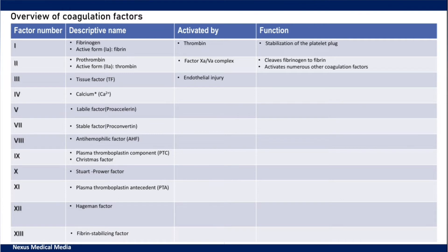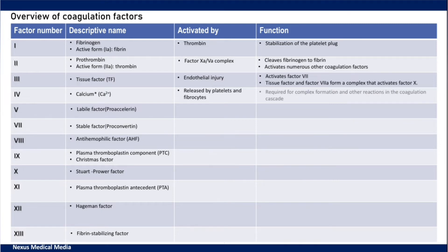Factor 3 is activated by endothelial injury and its function is activation of factor 7. Tissue factor and factor 7 in their active forms will form a complex that activates factor 10. Factor 4, calcium, is released by platelets and fibrocytes, and it is required for complex formation and other reactions in the coagulation cascade. Factor 5 is activated by thrombin and the active factor 5 and factor 10 will form a complex that cleaves prothrombin into thrombin.